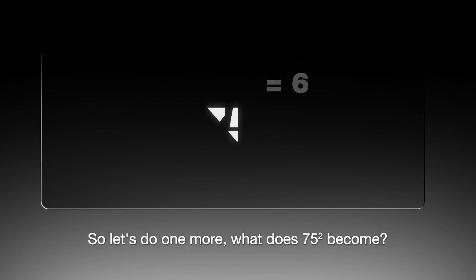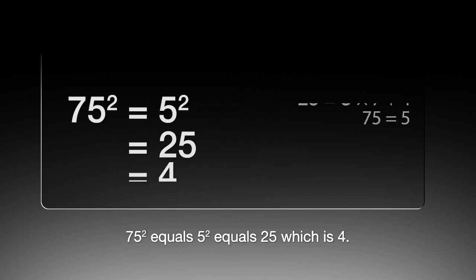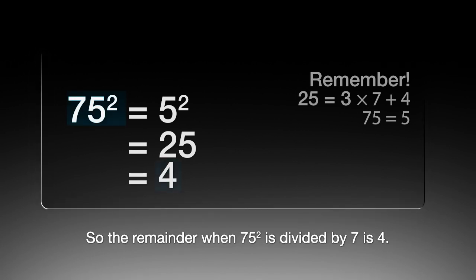So let's do one more. What does 75 squared become? What I'm asking there is what is the remainder when 75 squared is divided by 7. Well let's be lazy. 75 squared equals 5 squared equals 25 which equals 4. So the remainder when 75 squared is divided by 7 is 4.